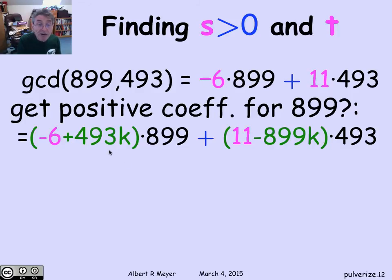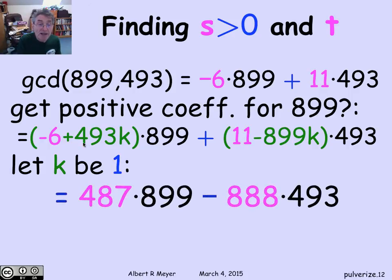By adding in any multiple of 493, I can make the first coefficient as big or as small as I like. In particular, if I want it to be positive, I might as well take the smallest value of k that works, which is 1. So if I let k be 1, I discover that I add 493 to minus 6, I get 487. And I subtract 899 from 11, I get minus 888. And there we are with another expression. For this time, s is 487 and t is minus 888. It's going to turn out that this little trick will enable us in the next video to come up with a general solution to the Die Hard bucket problem, which is fun.